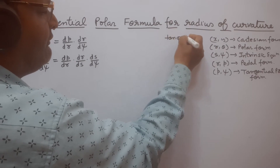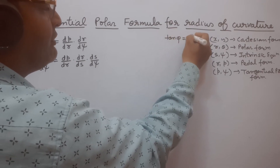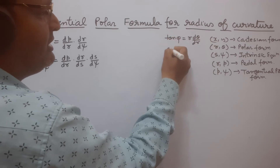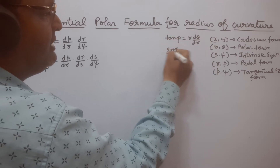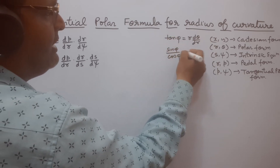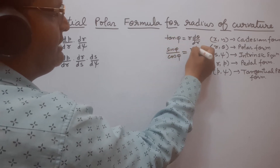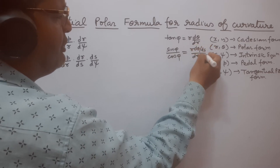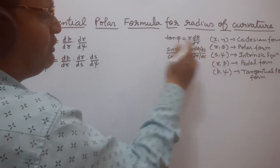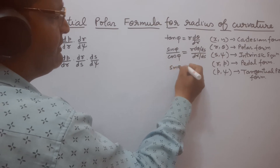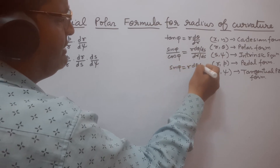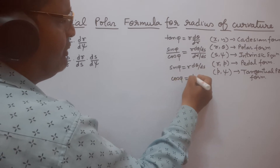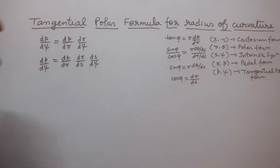We know that tan φ is equal to r dθ/dr. So tan φ can be written as sin φ / cos φ, and dθ/ds divided by dr/ds. From here we can find that sin φ is equal to r dθ/ds, and cos φ is equal to dr/ds.